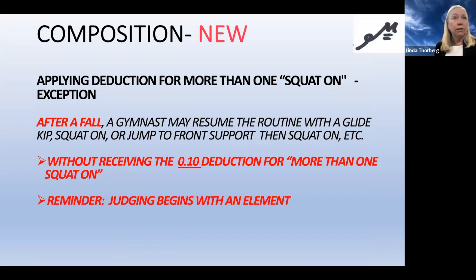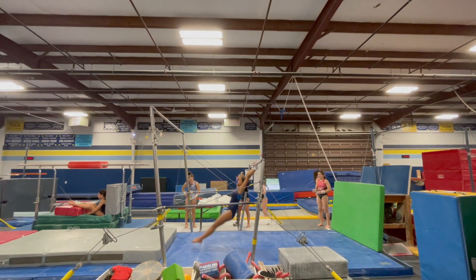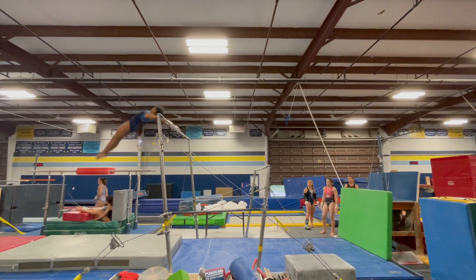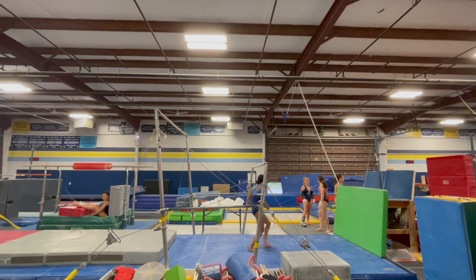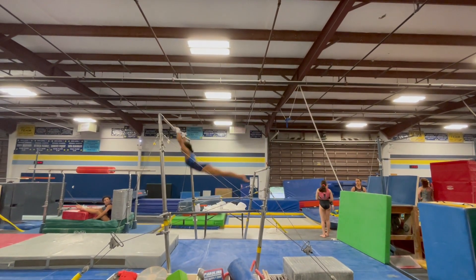Something new in composition is applying the deduction for more than one squat-on. We've always had that deduction: if they do more than one squat-on, stoop-on, or toe circle around, it's a flat one-tenth deduction. The new rule is that if the gymnast falls, she may resume the routine with a glide kip squat-on or jump to front support and then squat-on without getting that one-tenth deduction for more than one squat-on. Remember that judging does begin with the element she does after the fall — so if she does a glide kip and cast squat-on, we're going to judge the glide kip and cast for execution, so make sure she does it well.